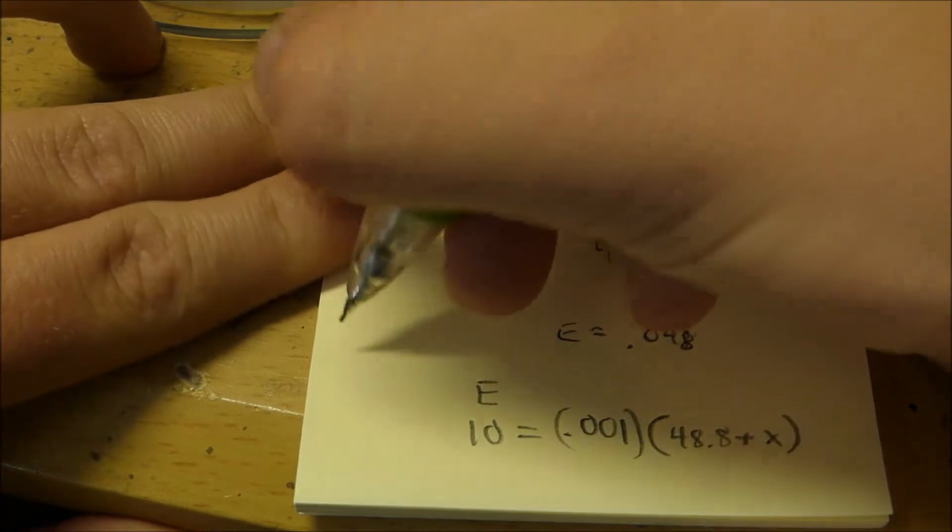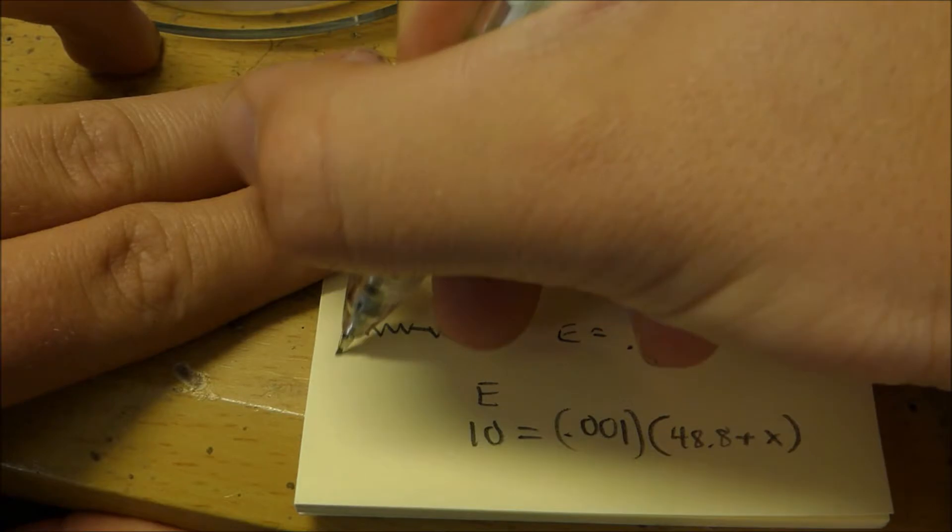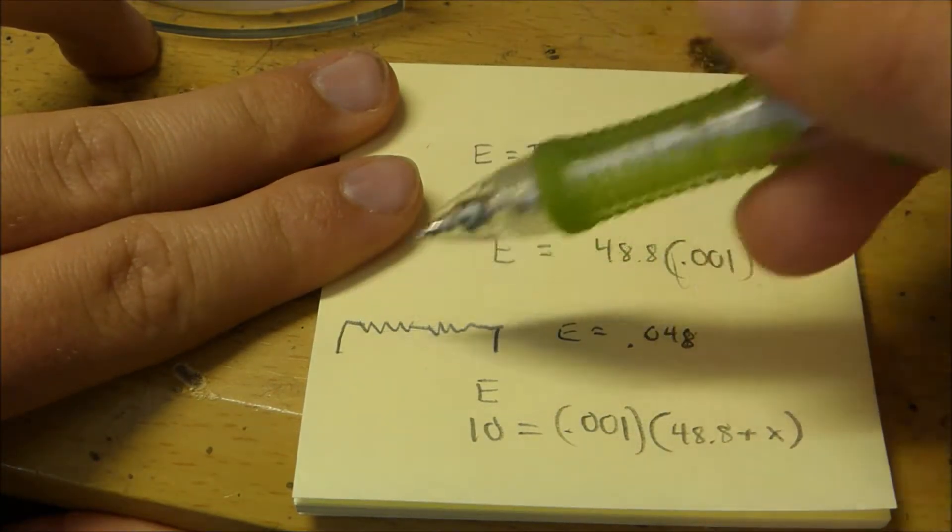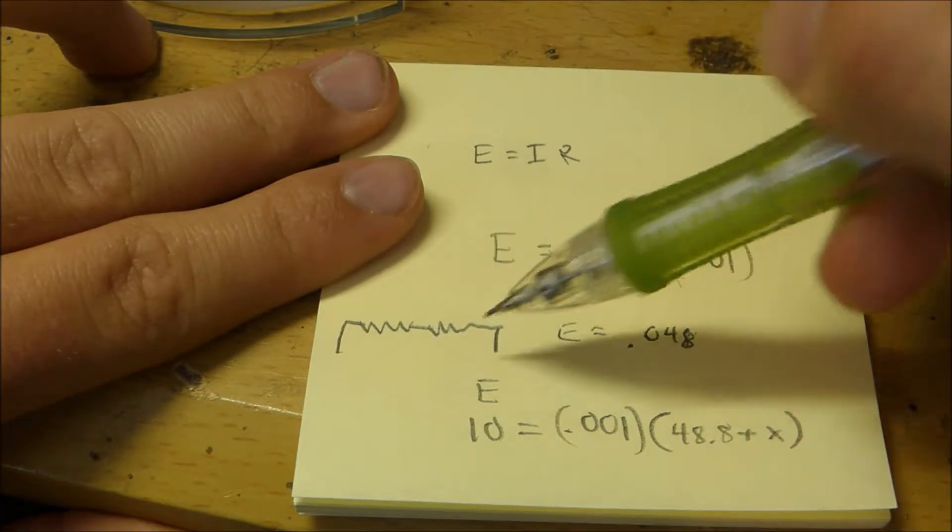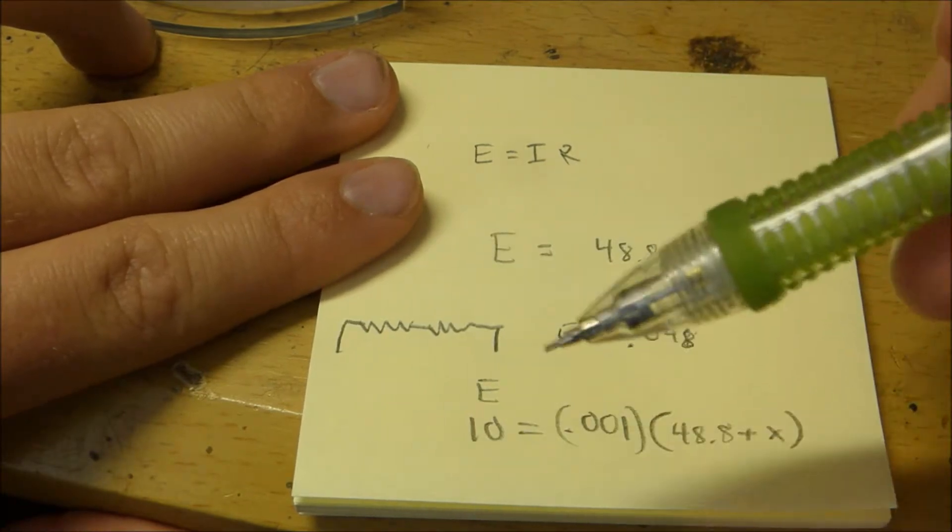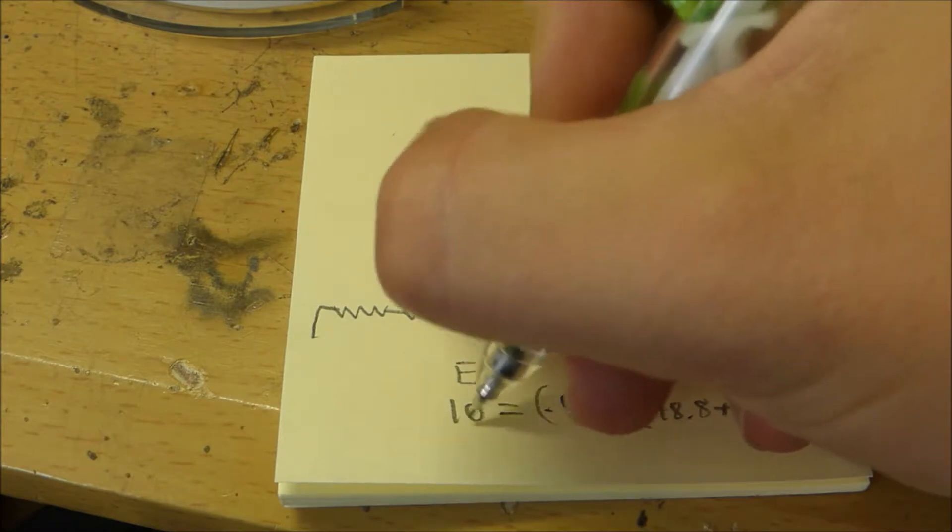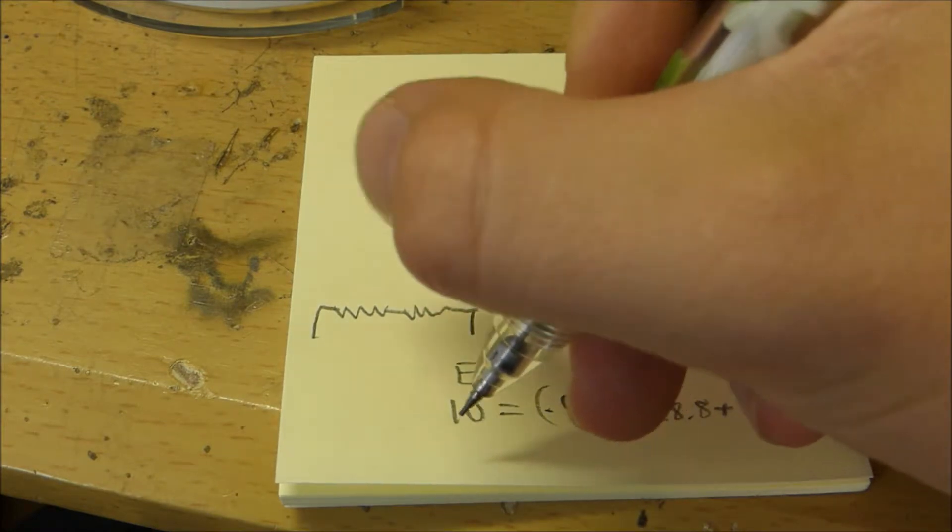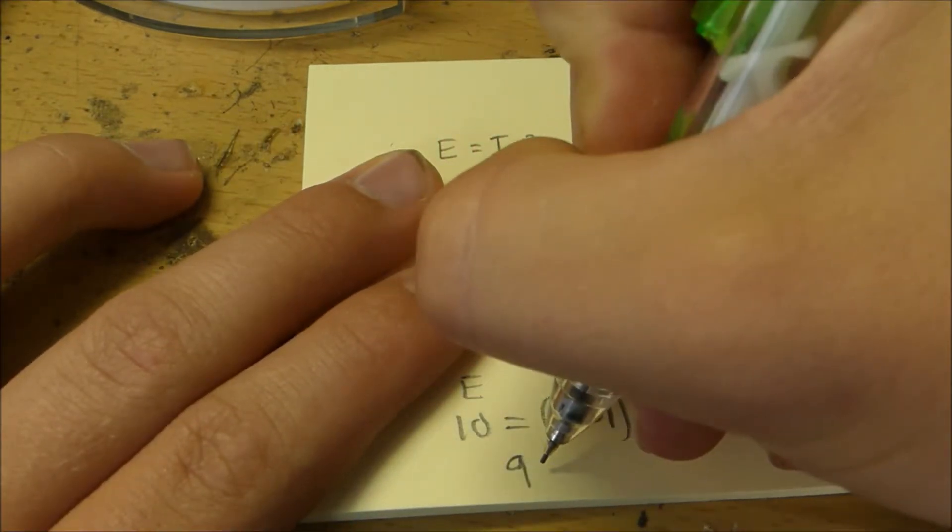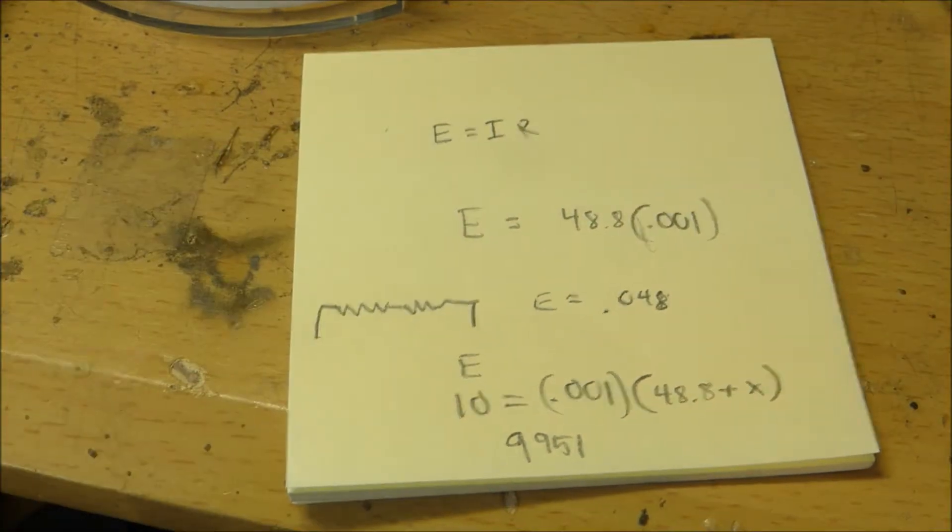Because we want to add two resistors together. Remember, in a series circuit where we have two resistors, the current flowing through that circuit will be the same. So even if one of these resistors is 48 ohms and one is 4 million ohms, the current flowing through this whole circuit is going to be the same through each resistor. So the approximate resistor we need for a 10 volt voltage would be approximately 9951 ohms, which is approximately 10,000 ohms.